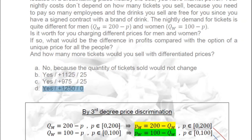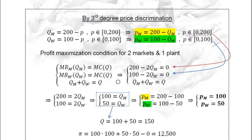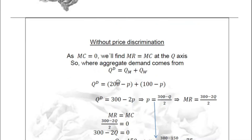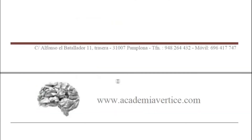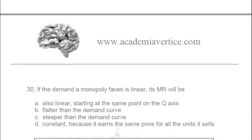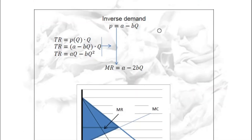This exercise may be long but should be straightforward if done calmly at home. If the demand a monopoly faces is linear, its marginal revenue will also be linear, starting at the same point on the p-axis. It is not flatter — it is steeper than the demand curve. If p = a minus bq, revenues are aq minus bq², and differentiating gives MR = a minus 2bq, confirming MR is steeper.